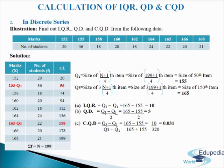Now we will calculate interquartile range. The formula is Q3 minus Q1. Q3 is 165 and Q1 is 155, so after deducting 155 from 165 we get 10 as IQR. Next we come to QD, that is quartile deviation. The formula is Q3 minus Q1 divided by 2. After calculation we get 5 as QD. Next we come to CQD, that is coefficient of quartile deviation. The formula is Q3 minus Q1 divided by Q3 plus Q1. After calculating we get 0.031 as coefficient of quartile deviation. This is how we calculate IQR, QD and CQD in discrete series.